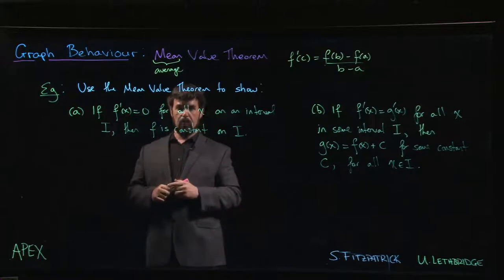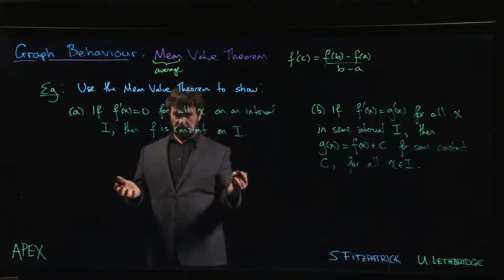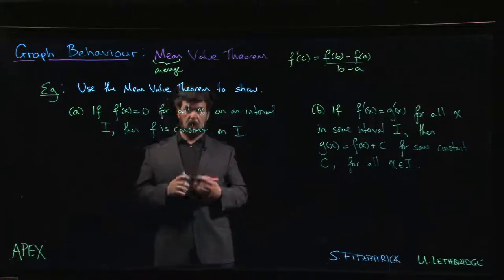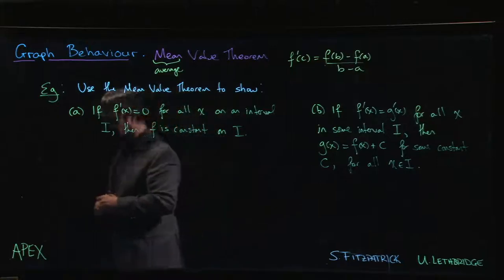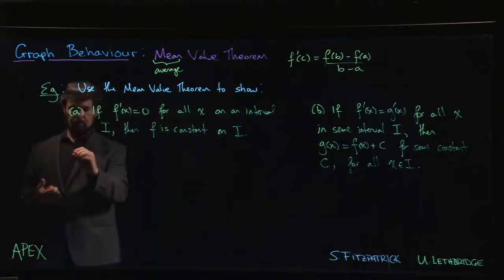This is going the other direction: if you know that the derivative is zero, we can be sure that the function is constant. In other words, constant functions are the only ones whose derivative is equal to zero everywhere.